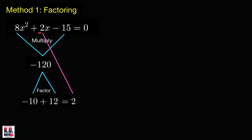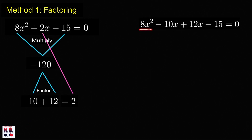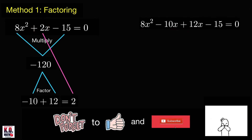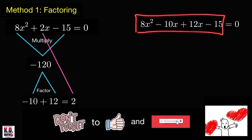Therefore, we can write 2x as negative 10x plus 12x, since those sum to 2x. So we can now write our trinomial as 8x² minus 10x plus 12x minus 15, equal to 0. This is where we apply factoring by grouping.